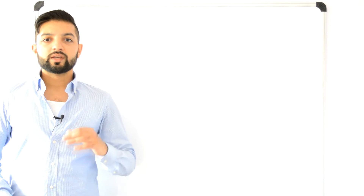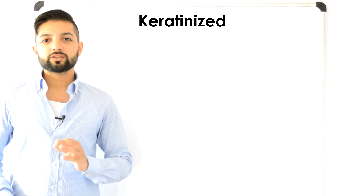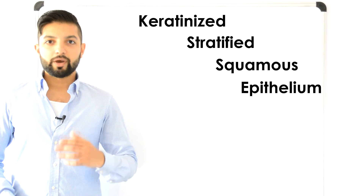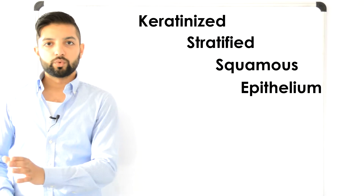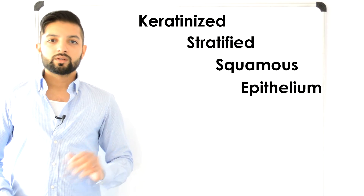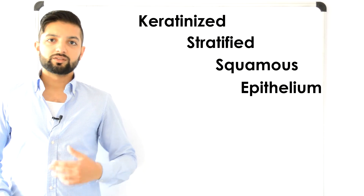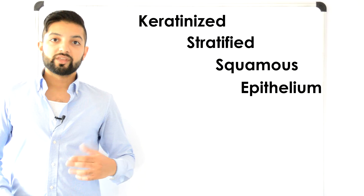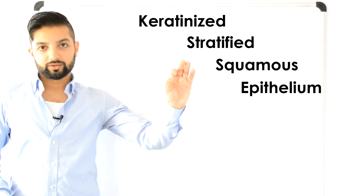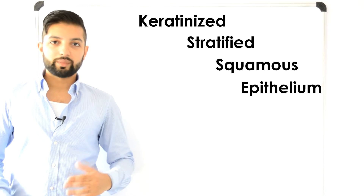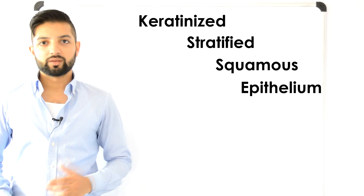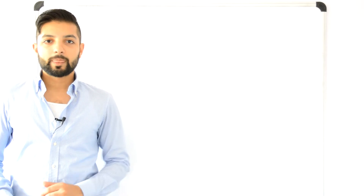Structurally, the epidermis is a keratinized stratified squamous epithelium. That's a mouthful, but if you break down the words you'll understand what it means. Keratinized means that the cell is loaded with a protein known as keratin. Stratified means the cells are layered on top of each other. Squamous means these are flat, egg-like cells. Epithelium means the tissue is epithelium.